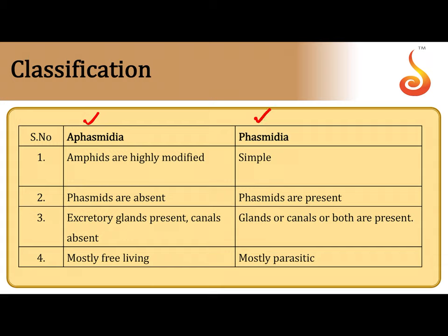The basic difference between these two classes is a structure called Phasmids. Phasmids are absent in Aphasmidia — hence the name Aphasmidia. Whereas Phasmids are present in the organisms referred to as Phasmidia.